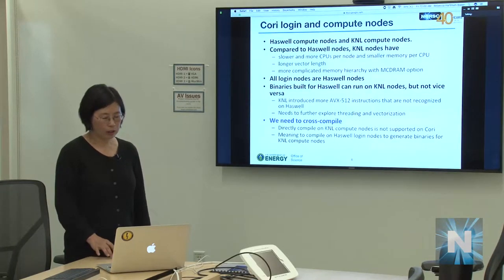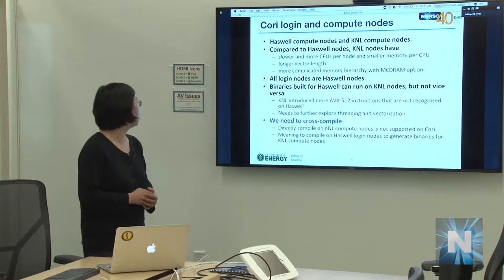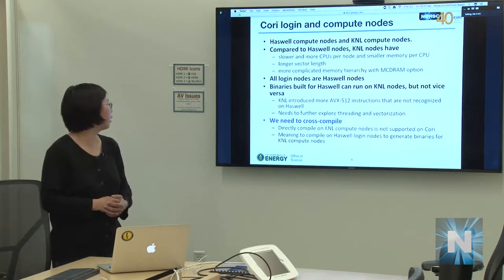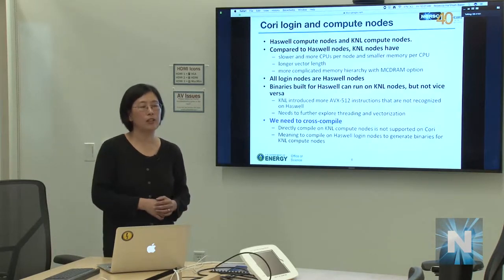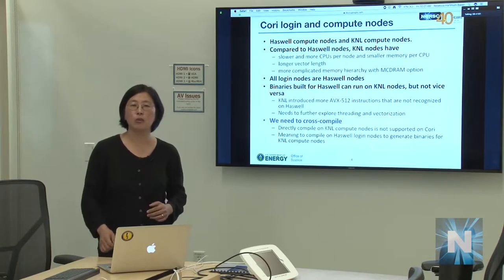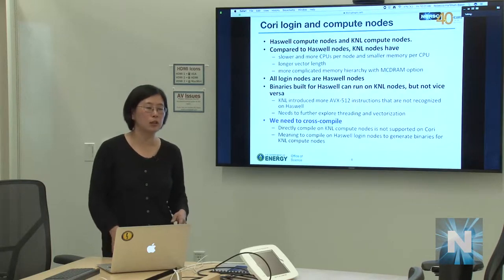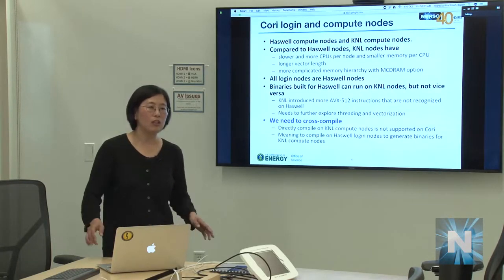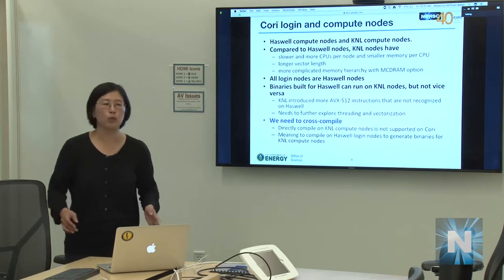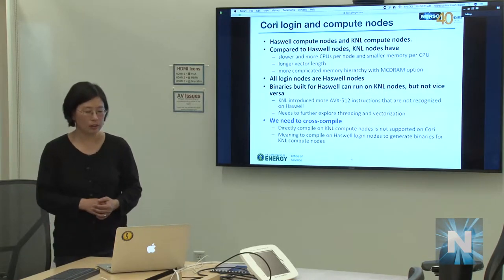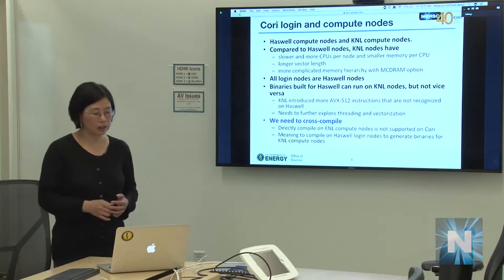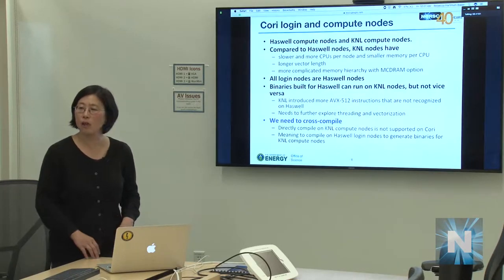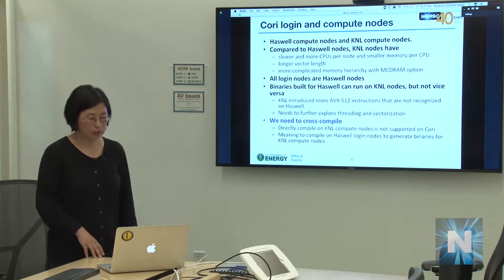A binary built for Haswell can run on KNL, but it won't be optimized because it doesn't exploit longer vector lengths or threading options. The reverse is not true: a KNL binary cannot run on Haswell because of new instructions introduced in KNL, specifically AVX-512 intrinsics.